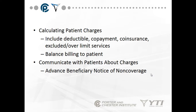Patient charges are calculated by including deductible, copayment, coinsurance, and over-limit services. For example, if the charge is $100 with a $10 copayment, the remaining charge is $90. If your HMO pays $70 of that, the $20 difference is written off — you cannot be balance-billed with HMOs. However, Medicare only pays 80% of Part B charges, so the remaining 20% is covered by supplemental insurance or paid out of pocket.